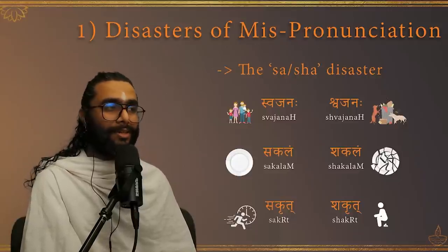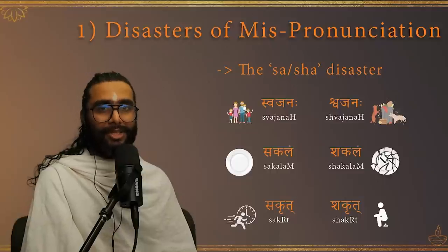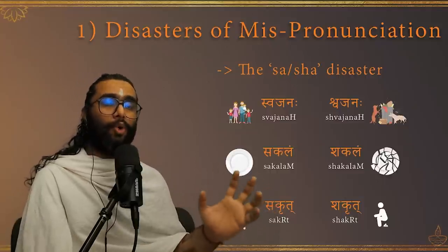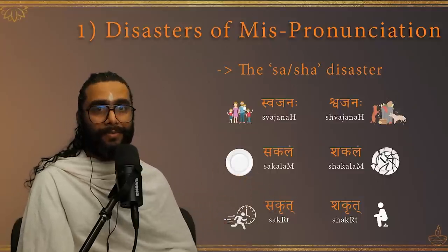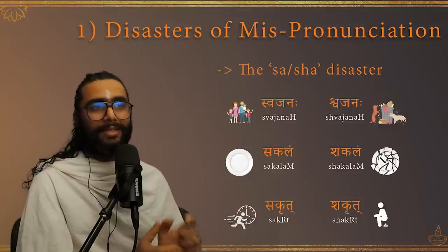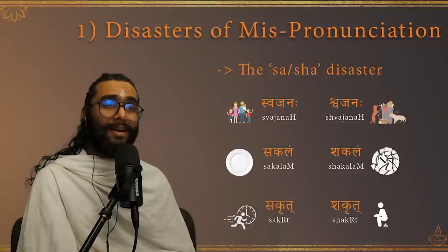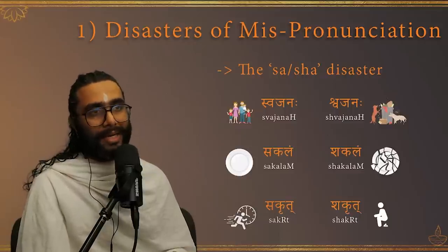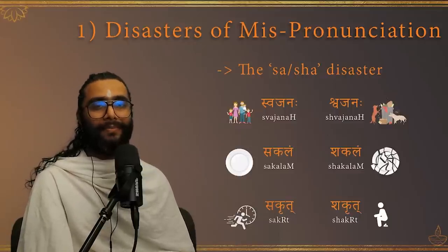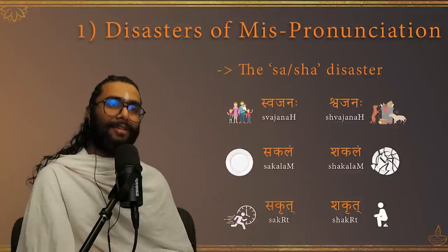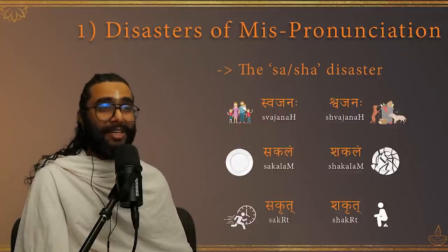That is the distinction between 'svajana' and 'svajana'. 'Sakalam' means everything, the whole — 'sakala'. 'Shakala' is a fragment or a piece. 'Sakrat' means at once, immediately — 'jhatiti'. 'Shakrat' is excrement — it's literally shit.